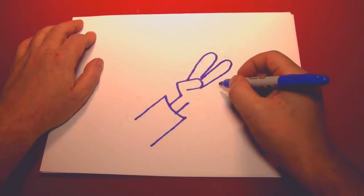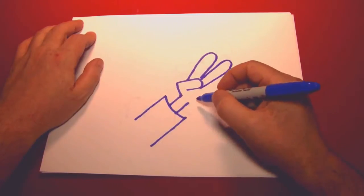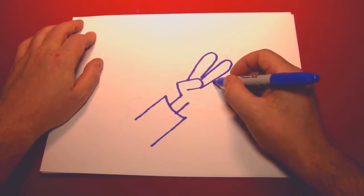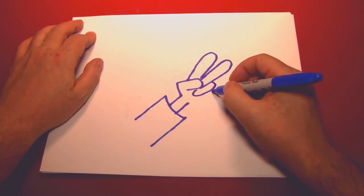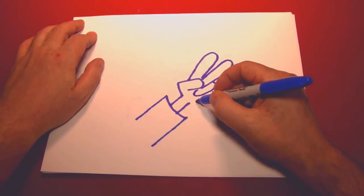Next we just have the ring finger and the pinky. They're very easy to put in at this point because it's just one curvy line like that. And another smaller one just below it.